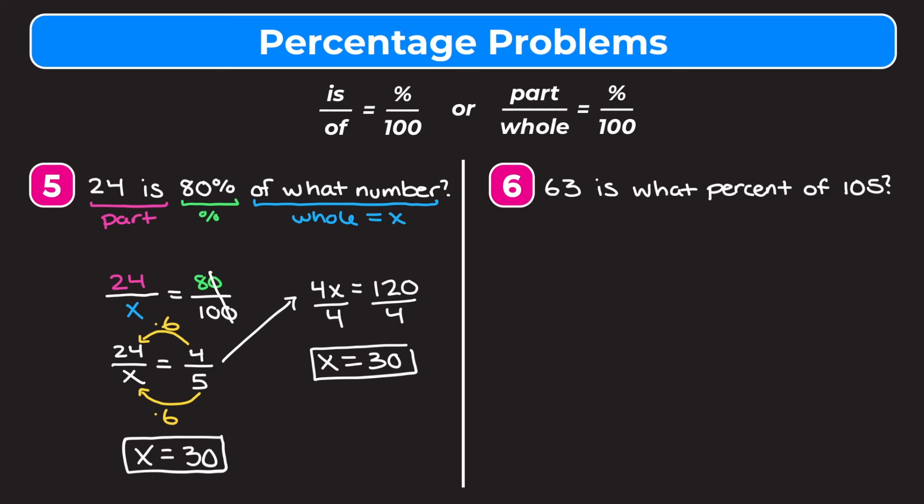Now we want to mentally check that our answer makes sense. The problem says 24 is 80% of some number. 80% is more than 50% but less than 100% and closer to 100%. Looking at our answer of 30: 50% of 30 is 15, and 100% of 30 is 30. 24 is in the middle and closer to 30, which is closer to 100%. So our answer makes sense.